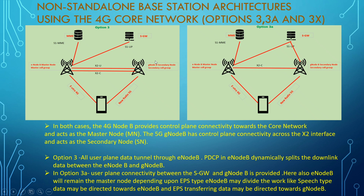In Option 3a the architecture is almost the same, with the main difference being in the control plane and user plane. In both Option 3 and 3a, the 4G eNodeB provides the control plane connectivity towards the core network and acts as the master node. The 5G gNodeB has control plane connectivity through the X2 interface and acts as the secondary node.